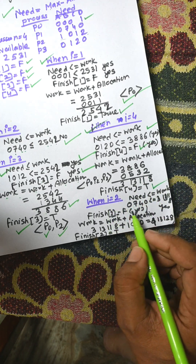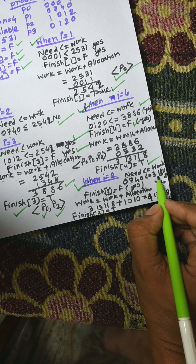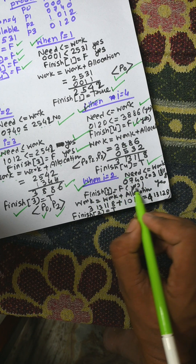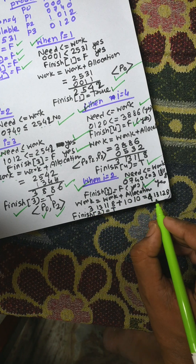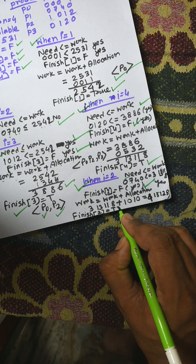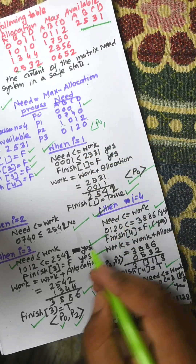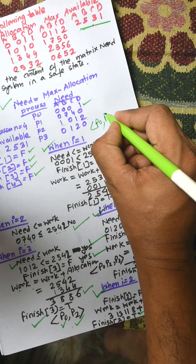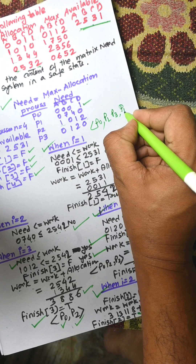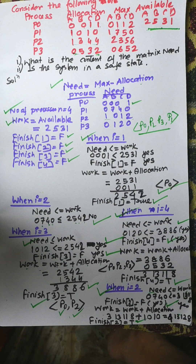In the final pass, for the last remaining process (P1, i=2), Need 0, 7, 4, 0 is now less than or equal to Work 3, 13, 11, 8, and Finish[1] is false — yes. Work is updated and Finish[1] is set to true. The safe sequence is P0, P2, P3, P1. Therefore, there is no deadlock in the system.